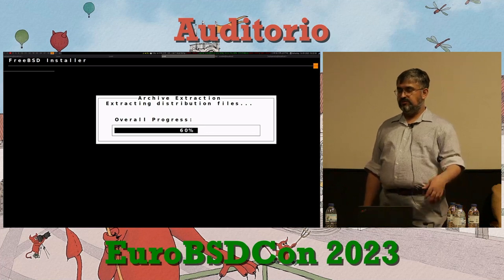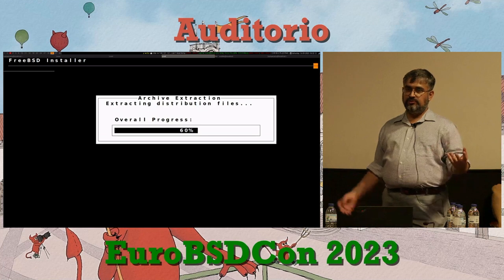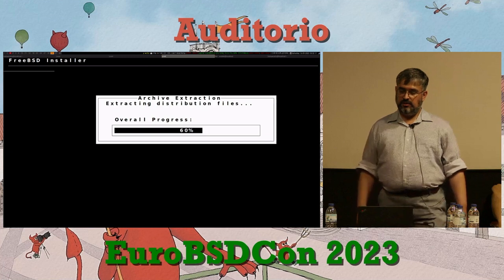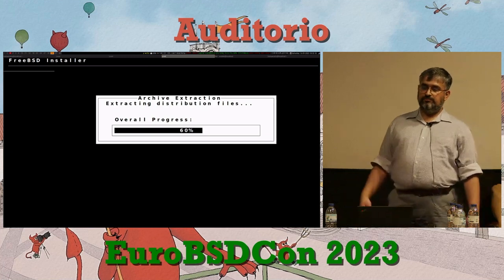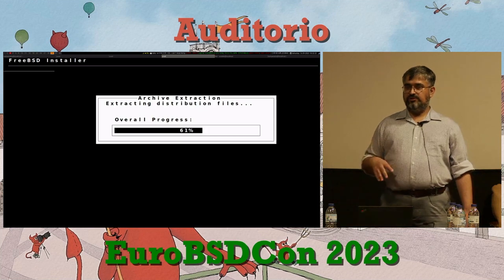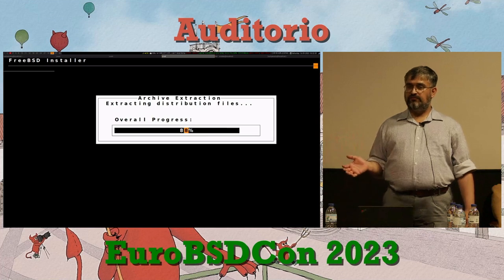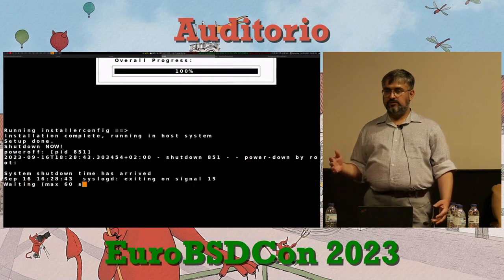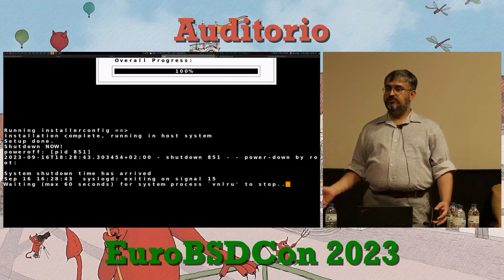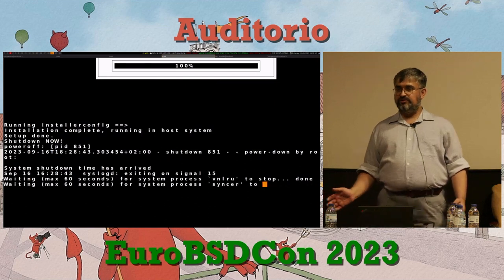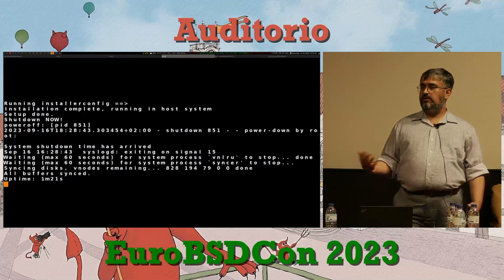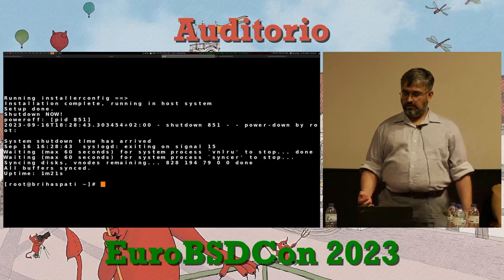This demo uses a USB installer image so it doesn't need to fetch from the internet. Typically any Power machine can be installed through the USB installer image available from the FreeBSD website. However, some machines — mostly proprietary ones — may require PXE boot, while all open machines will boot from USB. The install takes about one minute and twenty-one seconds.